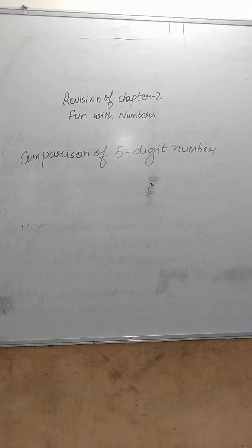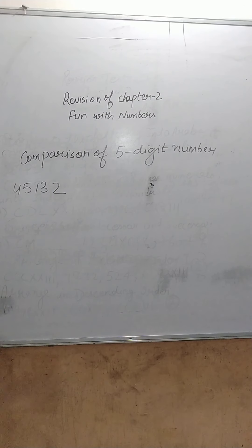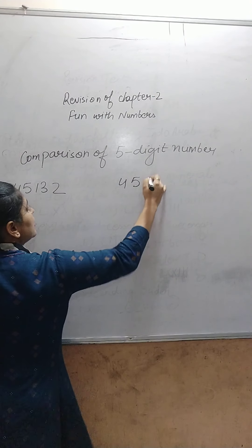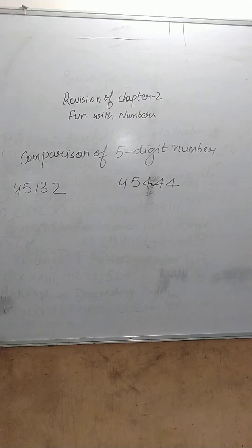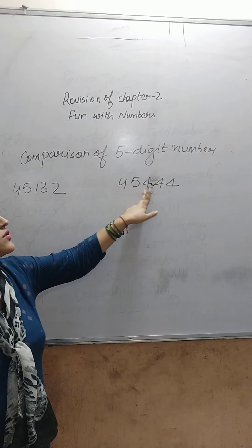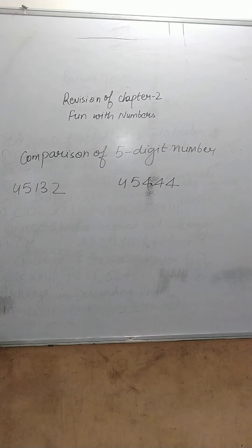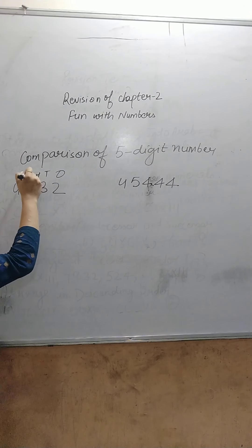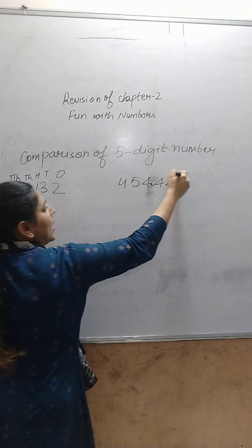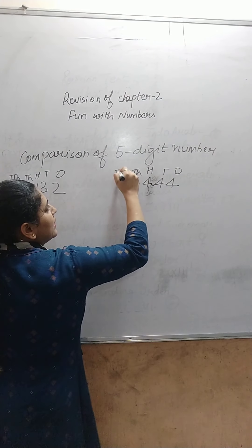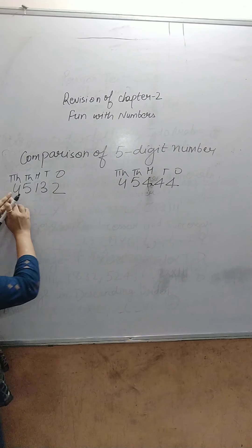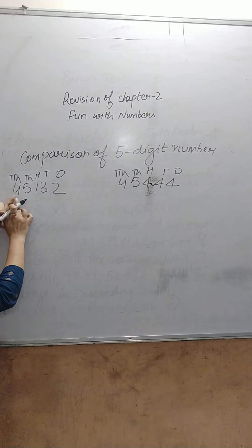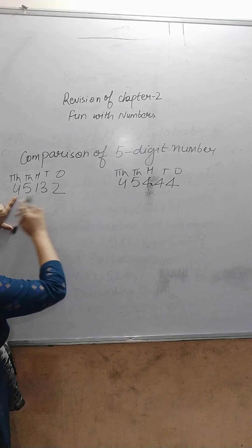Let's take one example of comparison. Here is the number 45,132 and the other number is 45,444. We have to tell which number is greater. First of all, write the place values: 1, 10, 100, 1,000, 10,000. Compare the 10,000 place: both have 4, so numbers are the same. Move to the next digit.